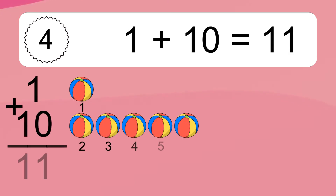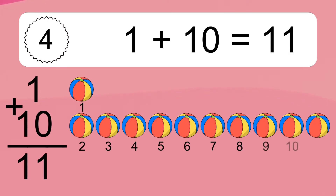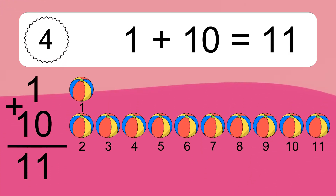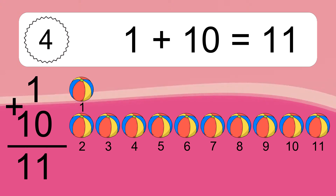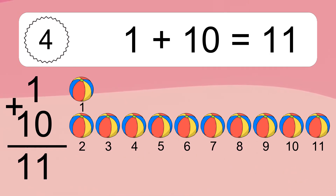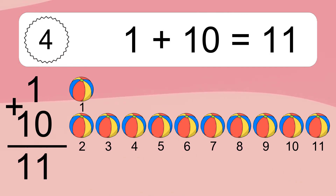1 plus 10 equals what? 1 plus 10 equals 11. Let's count it. 1, 2, 3, 4, 5, 6, 7, 8, 9, 10, 11.